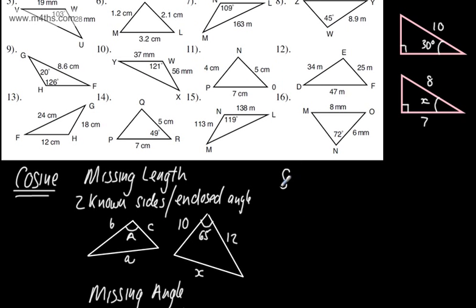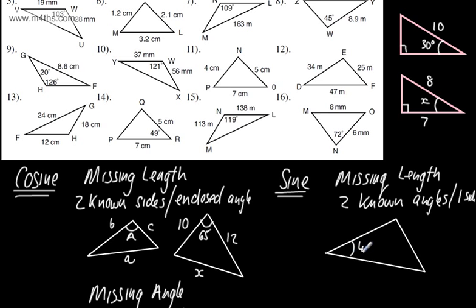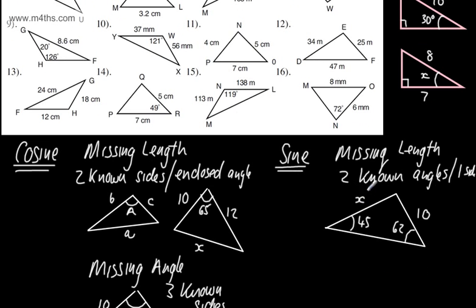So when are we going to use the sine rule? We use the sine rule when we don't have those enclosed angles. For a missing length, we need two known angles and one side. For example, if we have angles of 45 degrees and 62 degrees, and one known side, we can find the missing length X. We can see that we don't have an enclosed angle, so we simply use the sine rule.